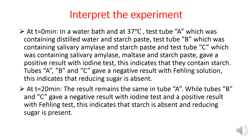To interpret the experiment: at t equals zero in a water bath at 37 degrees Celsius, test tube A with distilled water and starch paste, test tube B with salivary amylase and starch paste, and test tube C with salivary amylase, maltase, and starch paste all gave a positive result with iodine test, indicating they contain starch, and a negative result with Fehling's solution, indicating reducing sugar is absent.